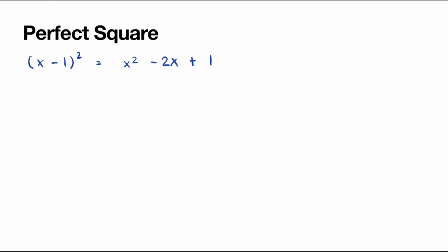For the next example, we have x minus 2 squared. We always have x squared plus 2 times the number inside the bracket, so 2 times negative 2, which is negative 4, giving us negative 4x, plus the number inside the bracket squared: negative 2 squared, which is plus 4. So these are also perfect squares.